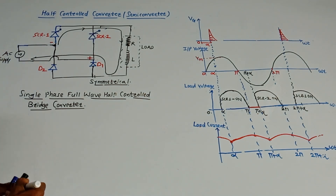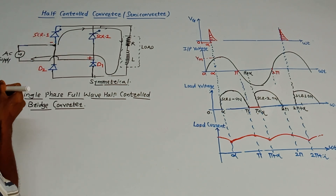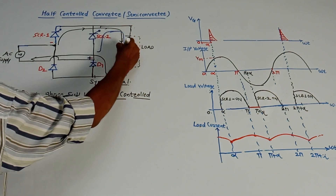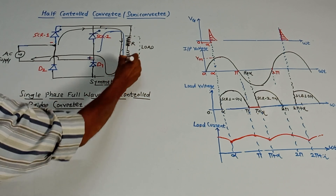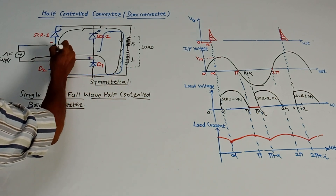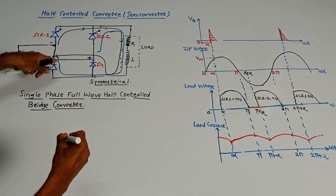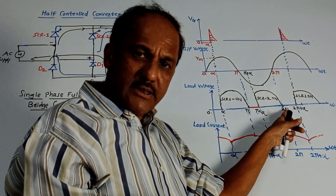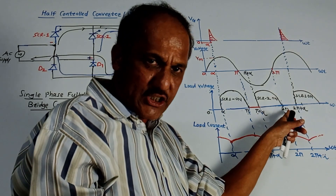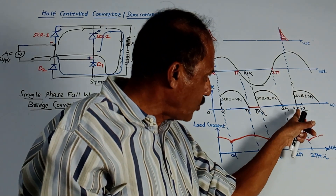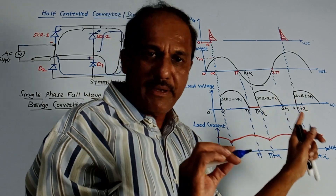The same thing repeats during the negative half cycle. This terminal will be negative and this will be positive. Due to this positive terminal, SCR2 will start conducting. Current flows through SCR2, through the resistor and inductor (the load), and through diode D2. This is the flow of current during the negative half cycle. Again, the circuit tries to switch off SCR2, but due to the freewheeling diode and inductor action, current continues in the same direction — from 2pi to 2pi plus alpha — but output voltage during this time period is zero.